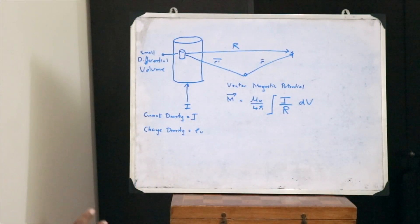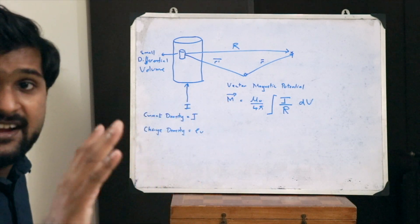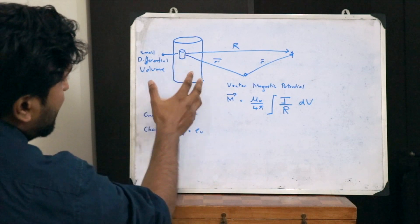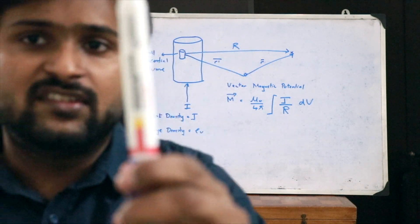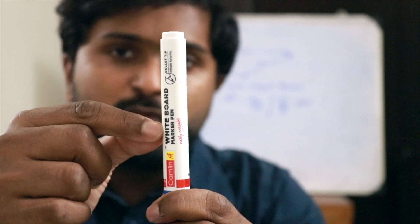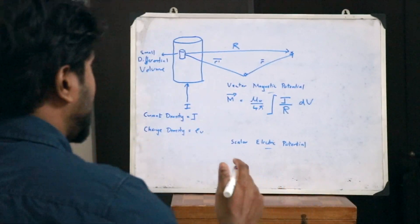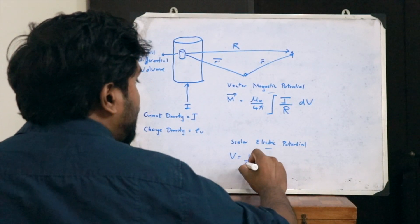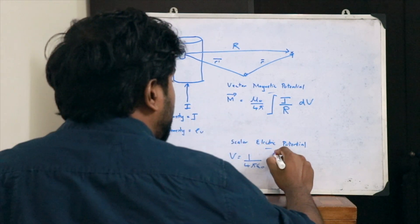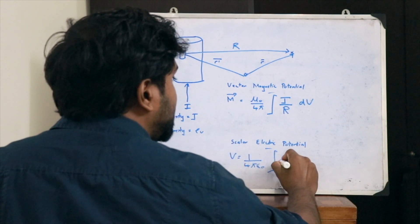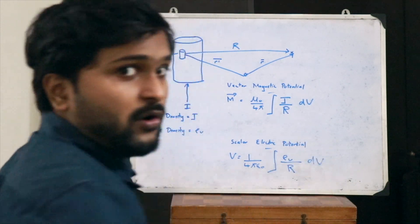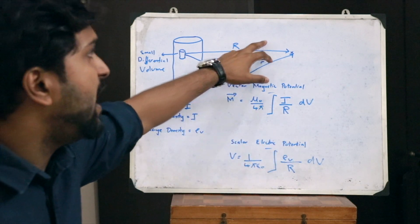Since we assumed the current to move upward, the electric field due to this current would act outwards from this conductor — moving outwards in all directions. Therefore, there is no specific direction for the electric field, and the potential due to this electric field is not a vector quantity but a scalar quantity. The scalar electric potential V is given as V = 1/4πε₀ times the integral of the volume charge density ρV divided by the distance R, integrated with respect to volume.